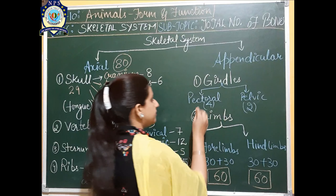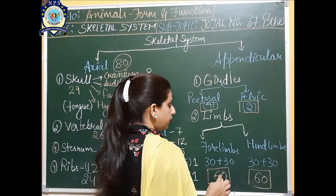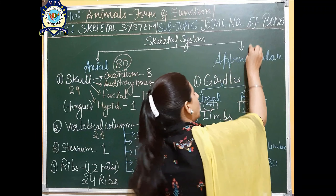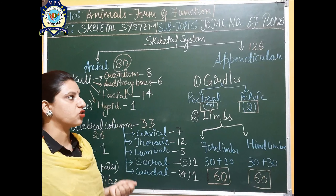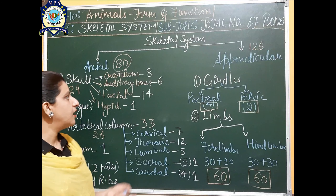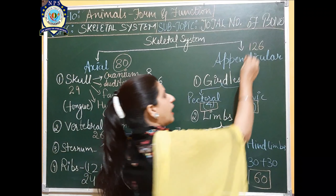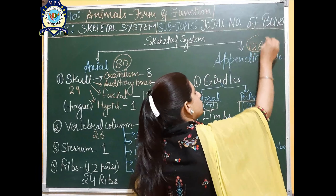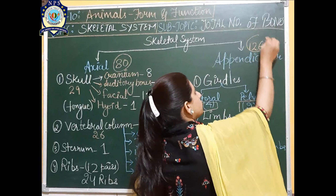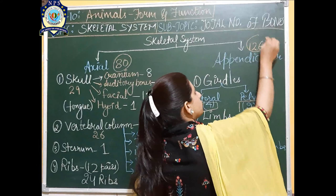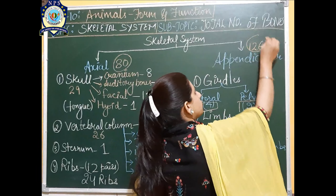Looking at the numbers: the skull has 29 bones, the vertebral column has 26 bones, the sternum is 1 bone, and the ribs are 24 in number. Adding these together, the axial skeleton has a total of 80 bones.